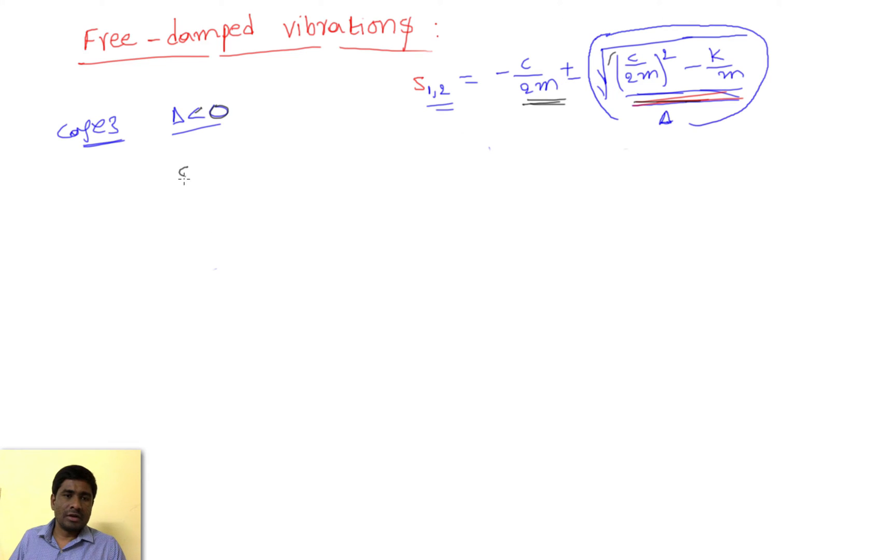This can be written as s1, s2 equals minus c. Before writing this form, I would like to simplify this equation. From the previous equation, we already defined xi equal to c by cc, where cc is the critical damping. So cc equals 2m omega n.